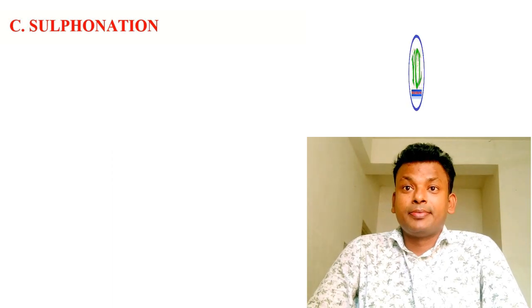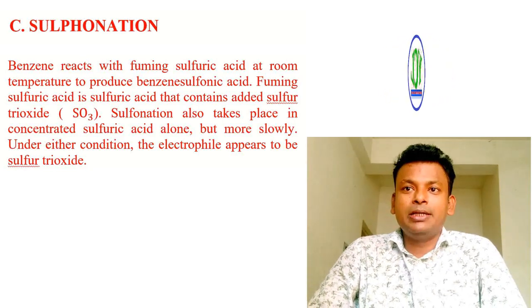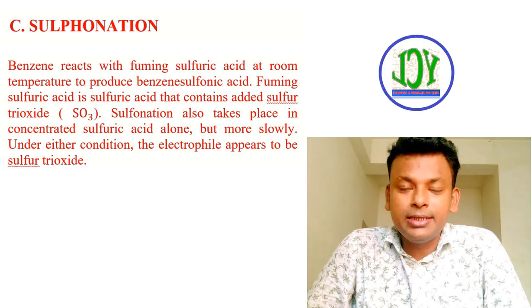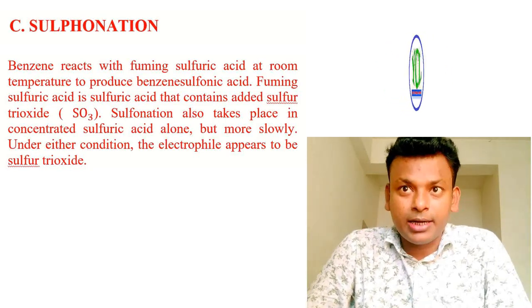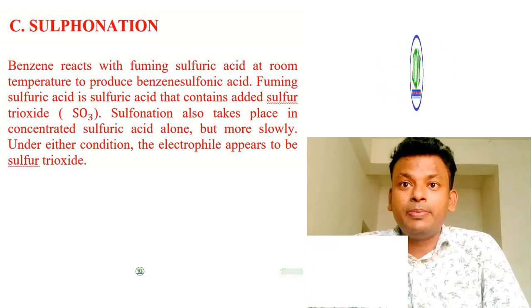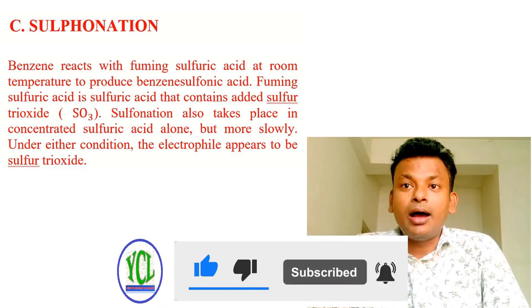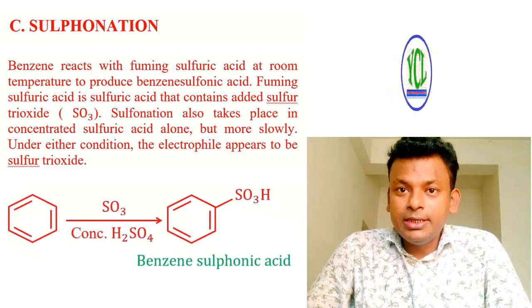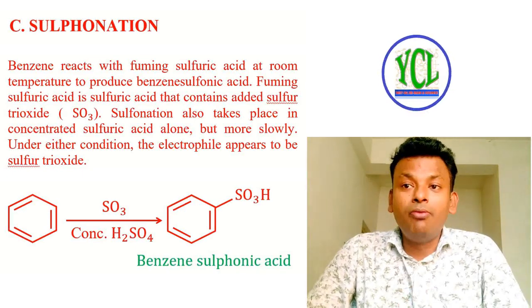Sulfonation of benzene: benzene reacts with fuming sulfuric acid (sulfuric acid containing dissolved SO₃) at room temperature to give benzene sulfonic acid. Sulfonation also occurs in concentrated sulfuric acid alone, but more slowly. Under either condition the electrophile appears to be sulfur trioxide SO₃. The reaction: benzene + SO₃ + concentrated H₂SO₄ → benzene sulfonic acid.